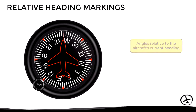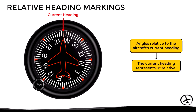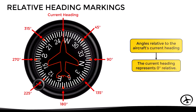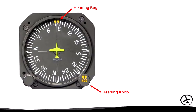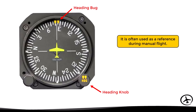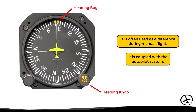Some heading indicators also include relative heading markings — reference angles relative to the aircraft's current heading. The current heading is used as a reference, representing 0 degrees relative. Markings are found at 45, 90, 135, 180, 225, 270, and 315 degrees relative — measured in relation to the current heading, not magnetic north. Some heading indicators also incorporate a heading bug and corresponding heading knob, allowing the pilot to select a particular heading, used as a reference during manual flight or in conjunction with the autopilot.